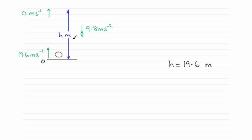When it reaches its greatest height, which I've called h meters, it comes to instantaneous rest, so that's zero meters per second. I've marked in the acceleration due to gravity, which acts vertically downwards, and that remains a constant value of 9.8 meters per second per second.